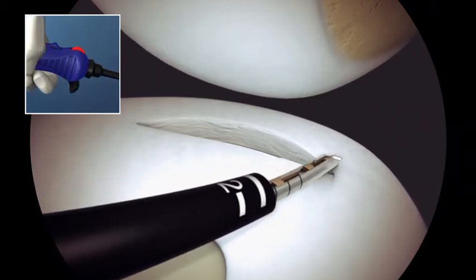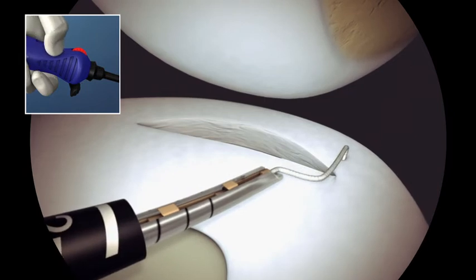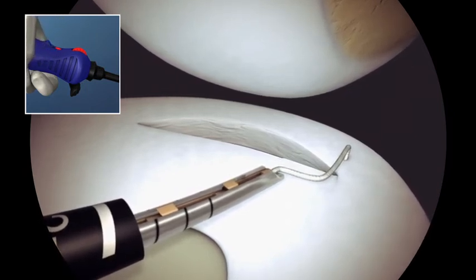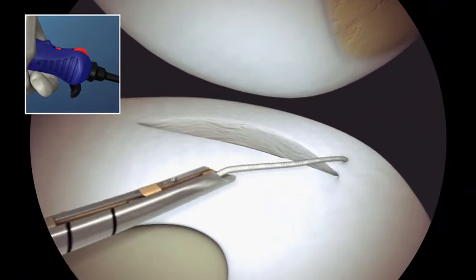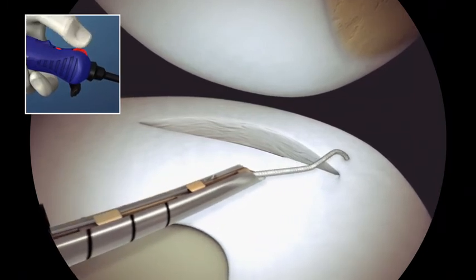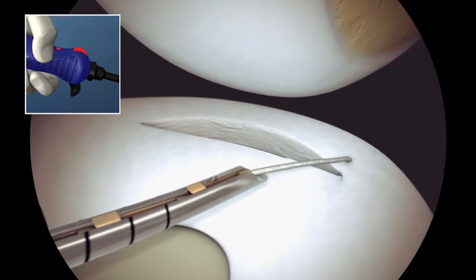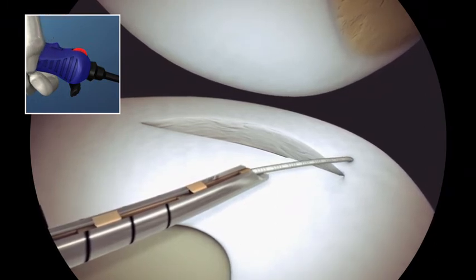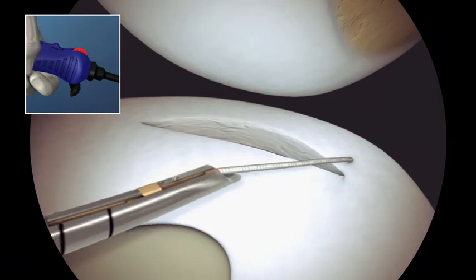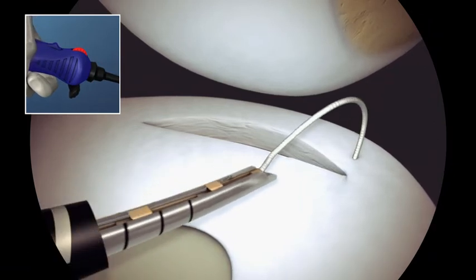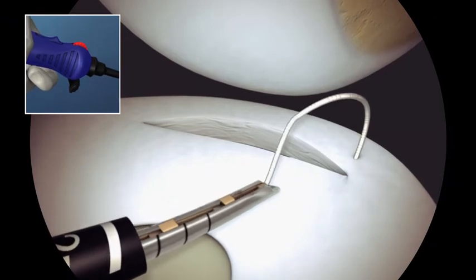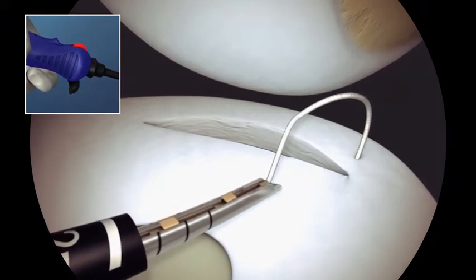Move the switch backwards to the ratchet position to tension the suture. The red dot should be exposed. Pull back on the device and reel the thumb wheel to tension the suture and ensure that the implant is set. Move the switch forward into the freewheel position to create slack in the suture. Target the position of the next implant on the meniscus.